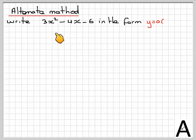Now, there is an alternative way of doing this method of completing the square. So take the same question, 3x squared minus 4x minus 6 in the form y is equal to a brackets x minus h squared plus k. So expand, first of all, the difference now, we take this and we now expand this.